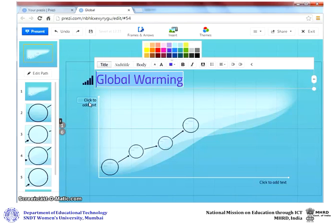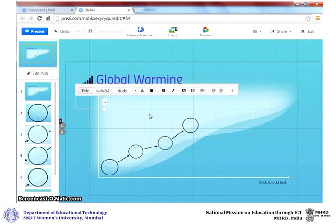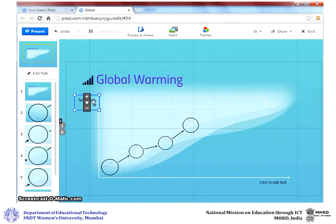You can click anywhere on the canvas to add text. This text can be moved around by using the hand icon. You can rotate it like this. You can extend the size of the text box.